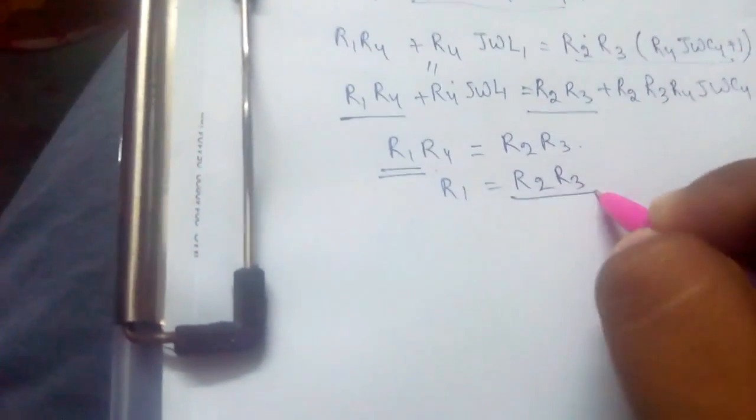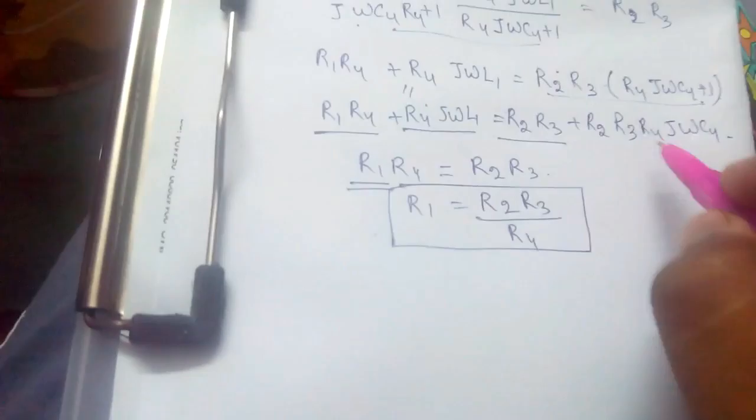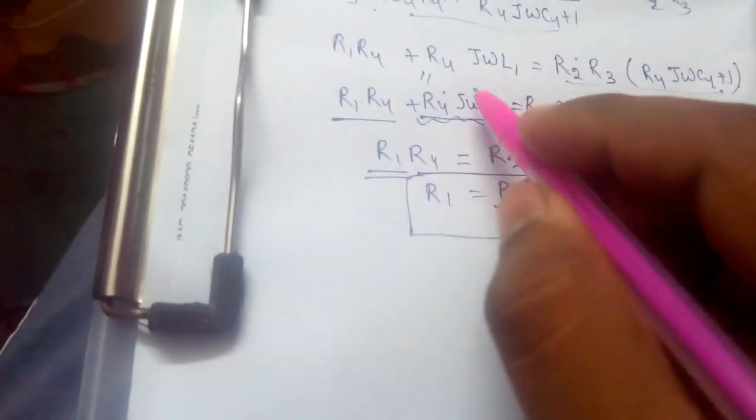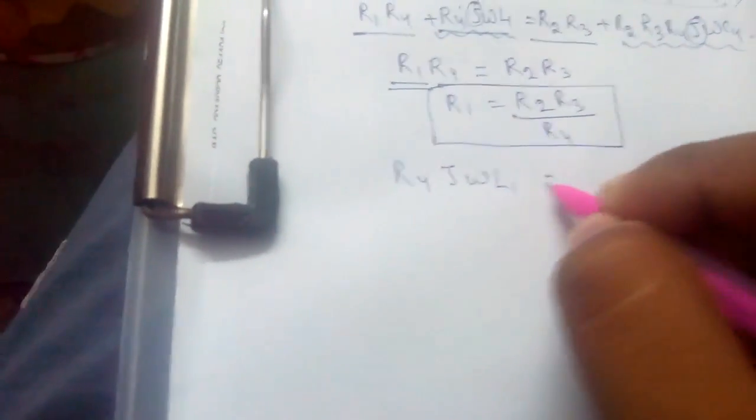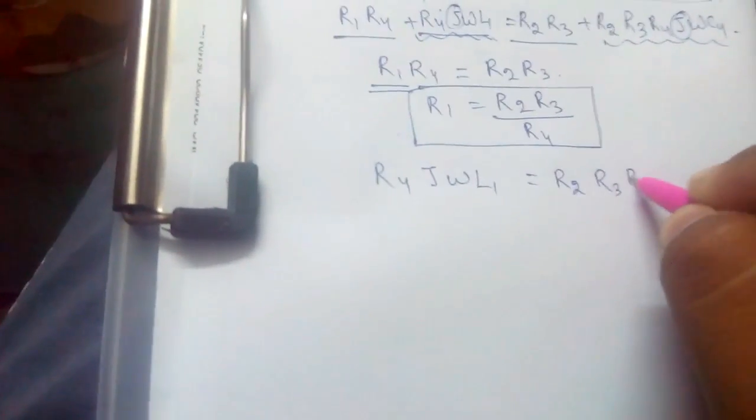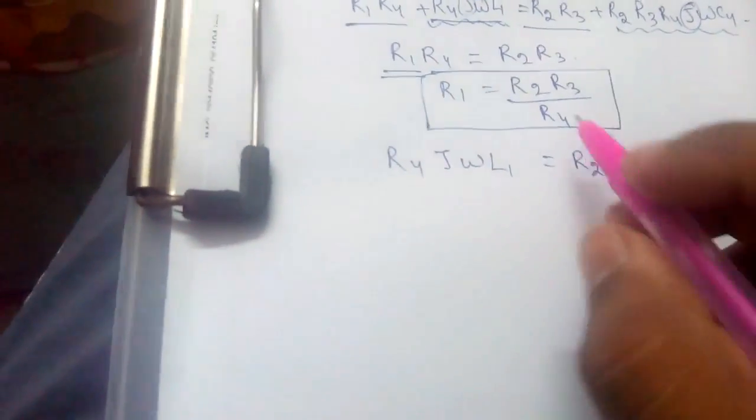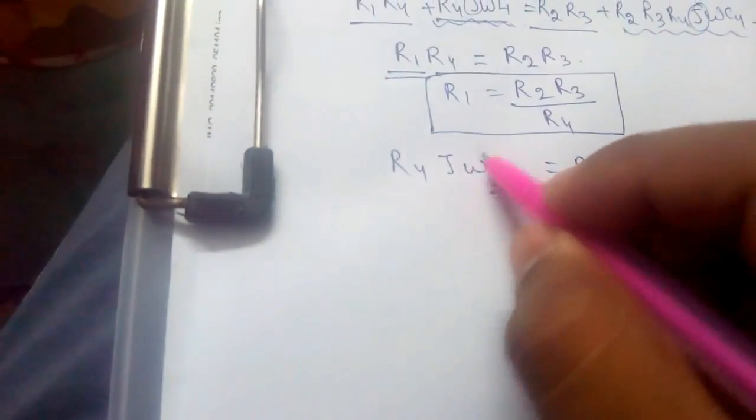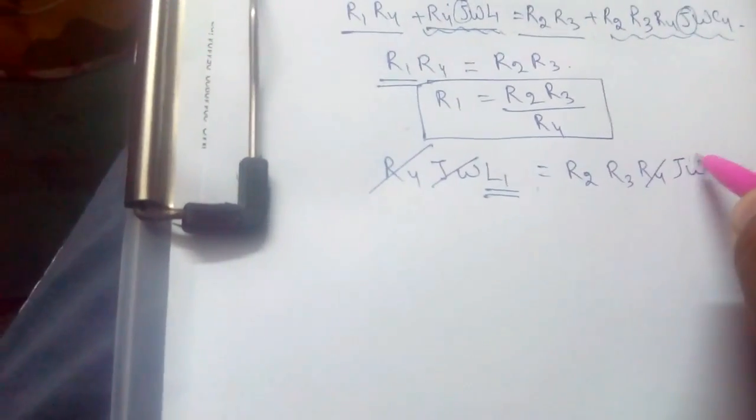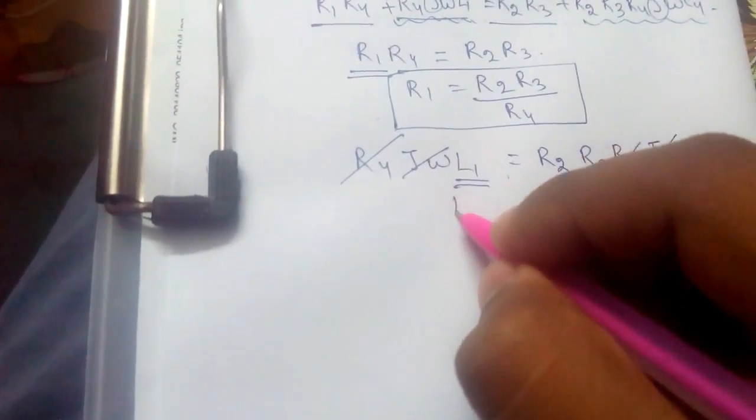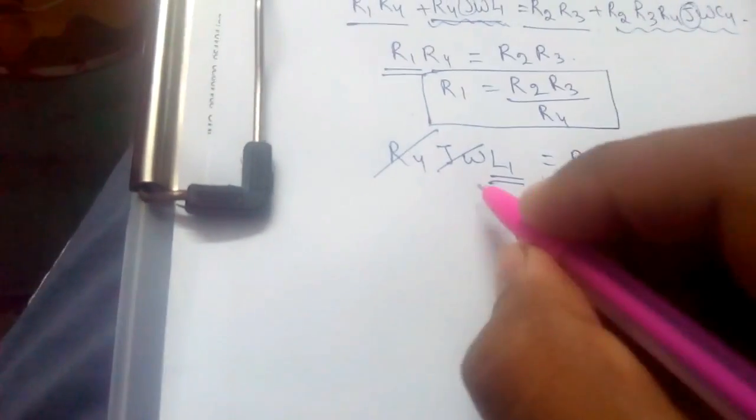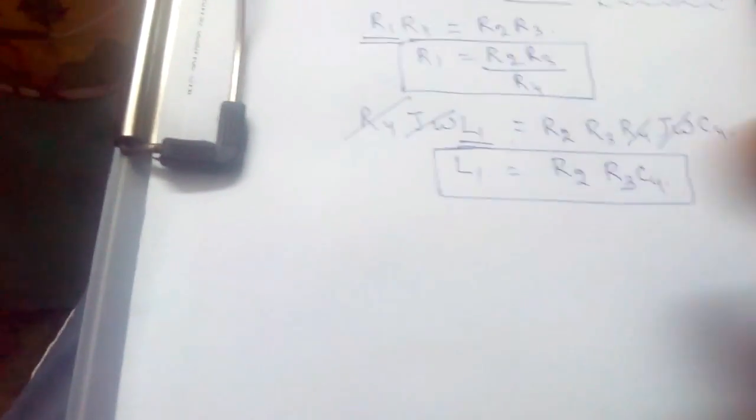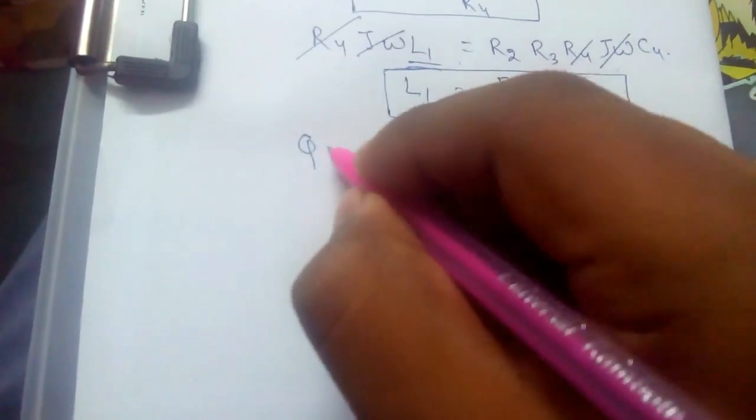And equating the complex parts, that means which contains j factor, j omega L1 is equal to R2 R3 R4 j omega C4. We can find the unknown inductances. j omega R4 would get cancelled. Therefore, L1 would be equal to R3 R2 C4.